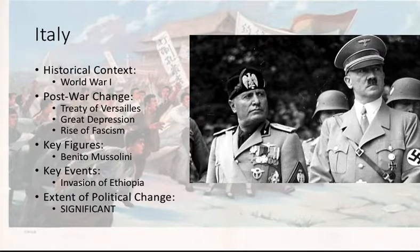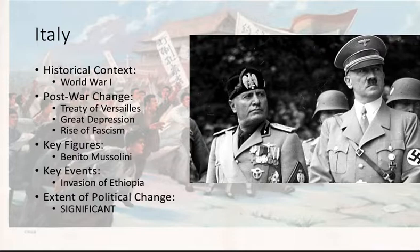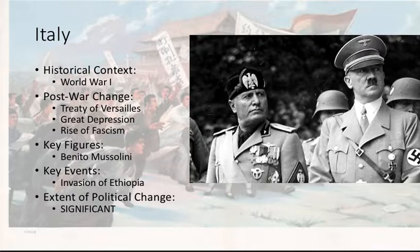A key event between the wars is the Italian invasion of Ethiopia. If you recall from late in the 1800s, Italy tried to invade Ethiopia and failed because Ethiopia is awesome. However, during this time Italy proves a little bit too much, and they're able to successfully invade and occupy Ethiopia beginning in 1935. This is important to keep in mind because it's an example of nationalistic expansion, which is a key characteristic of a fascist dictatorship. The extent of political change here? Significant — anytime you see the rise of a fascist dictatorship, we should argue that that is quite significant.